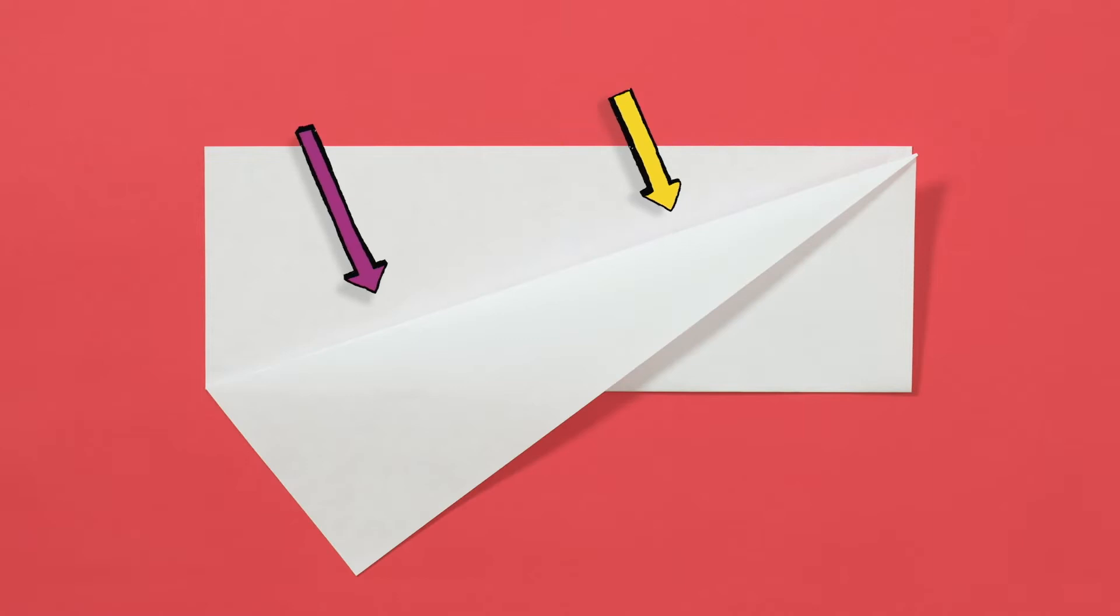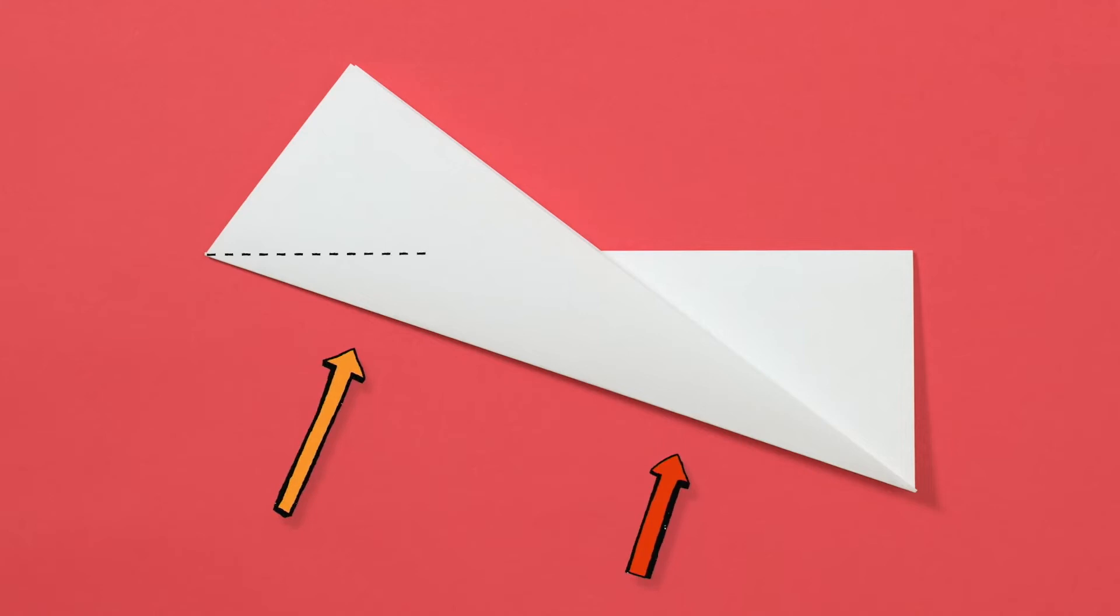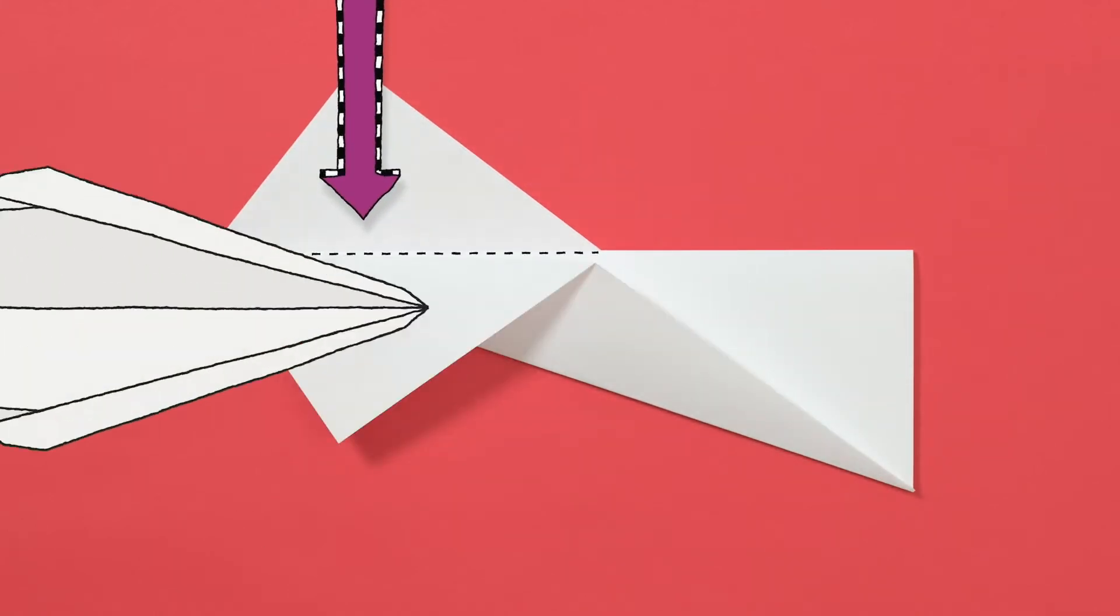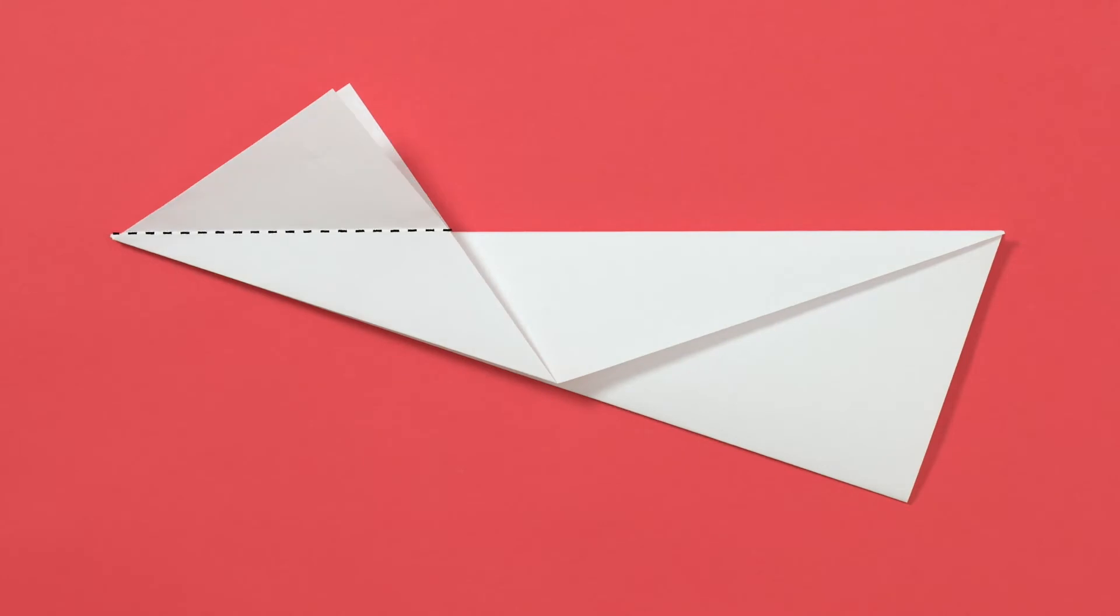Right, first fold the paper like this, and then like this. And do the same on the other side. Fold the triangle down like this on both sides. You want the front to be a point to cut through the air.